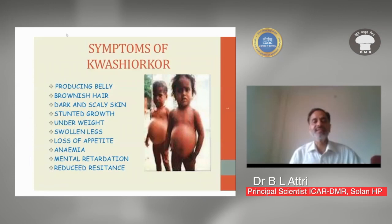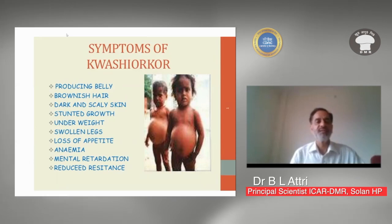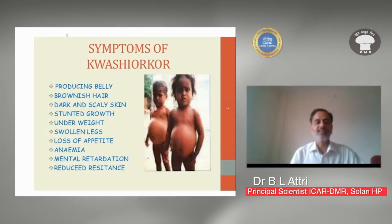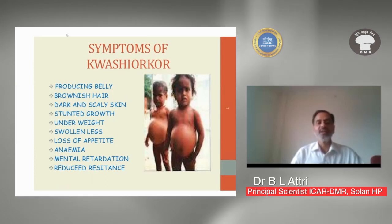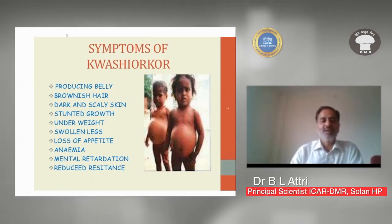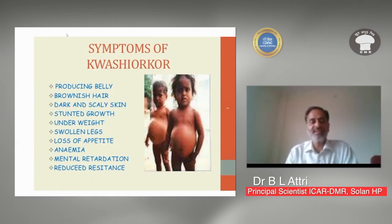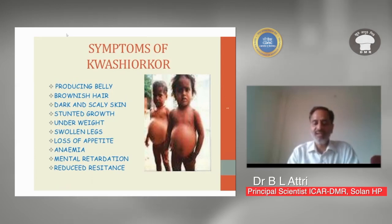Symptoms of kwashiorkor include a protruding belly, brownish hair, dark and scaly skin, stunted growth, underweight, swollen legs, loss of appetite, anemia, mental retardation, and reduced resistance — meaning the body has no immunity and the child falls sick very often.